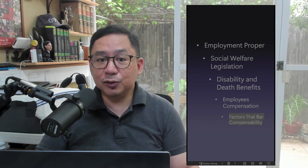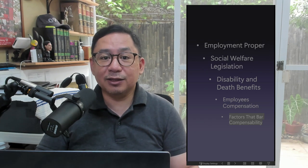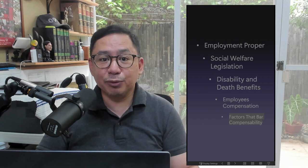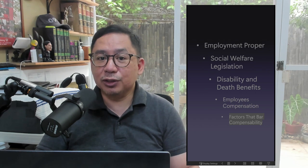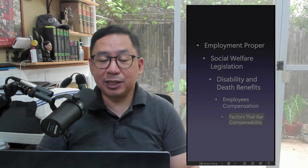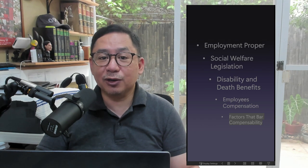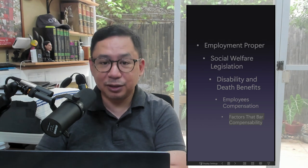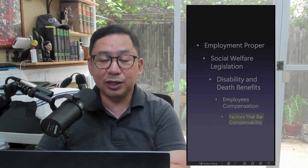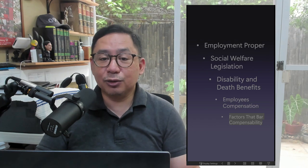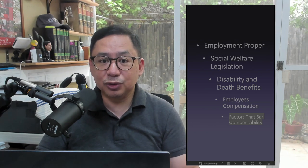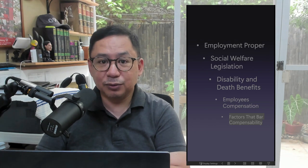The degree of intoxication must be such that it rendered the employee incapable of doing his work. Intoxication which does not incapacitate the employee from following his occupation is not sufficient to defeat the recovery of compensation, even though the intoxication may have contributed to the cause of the injury. It must be shown that the intoxication was the proximate cause of the death or injury.